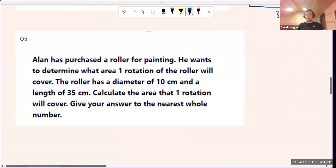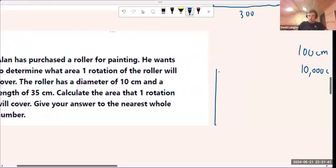Then the second part of this question: Alan has purchased a roller for painting. He wants to determine what area one rotation of the roller will cover. The roller has a diameter of 10 centimeters and a length of 35. A roller, in case you aren't aware, looks like this. And then this bit gets covered in paint and you roll it onto your wall like that.